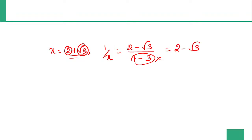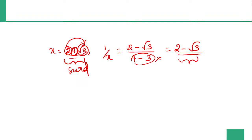For any set of numbers using this method you can find the conjugate. This is conjugate multiplication. Let's look at the same example with a different set of numbers. This is conjugate multiplication.